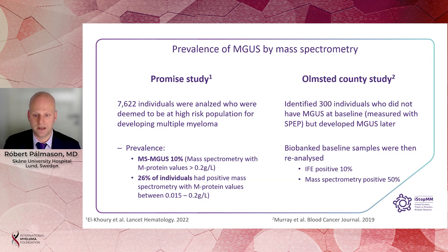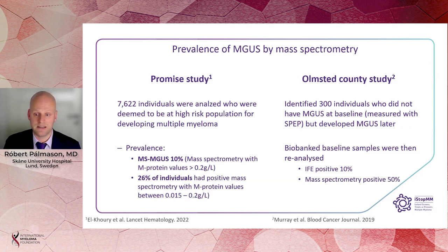The Olmsted County study identified 300 individuals who did not have MGUS at baseline according to SPEP, but developed it later on. They went back to the original biobank baseline samples and performed immunofixation, which turned positive in 10% of cases, compared to 50% when analyzed with mass spectrometry. This indicates that MGUS can be detected earlier by mass spectrometry compared to conventional SPEP or immunofixation.